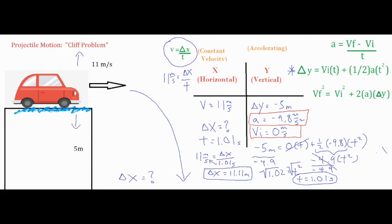From there, you take a look at each of your sides and see which side you have a little bit more information. On the horizontal side, if you have two variables, you'll be able to solve for something. On the vertical side, if you have three variables, you'll be able to solve for something — which will typically be time — and then you use that time to find your final solution. And that's how you solve a cliff problem.